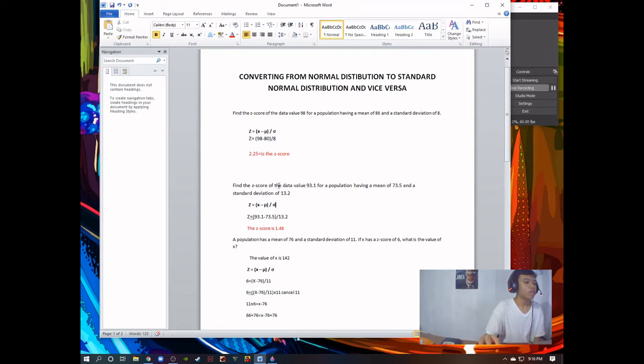Find the z score of the data value 93.1 for a population having a mean of 73.5 and a standard deviation of 13.2. Like number 1, we're going to find z. So, we're going to use the formula of z score. z equals to 93.1 minus 73.5 divided by 13.2 and the answer is 1.48.